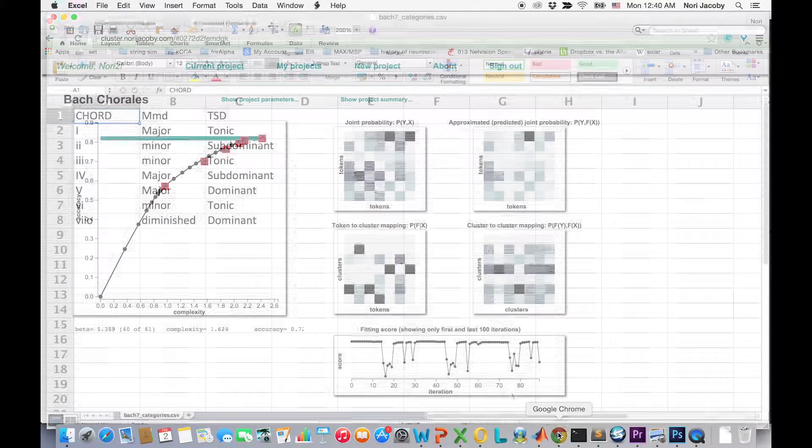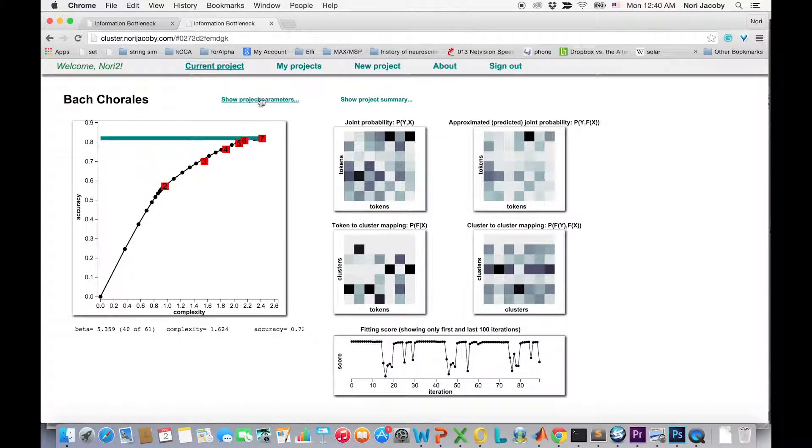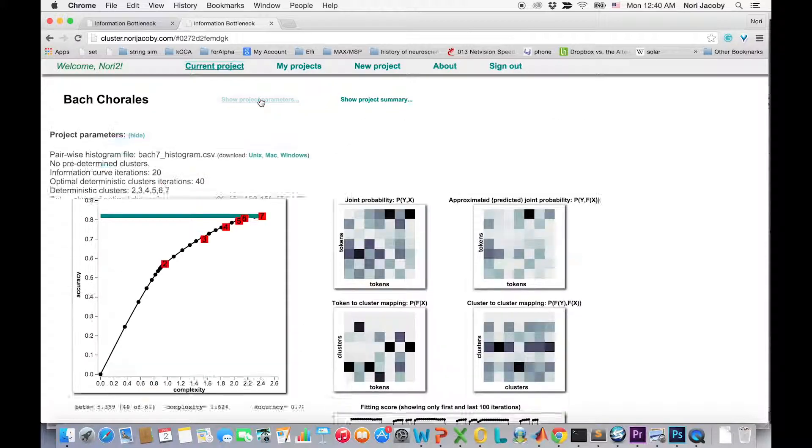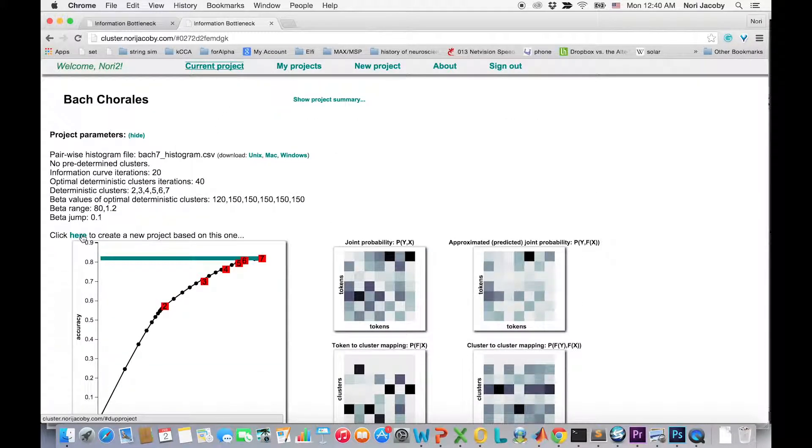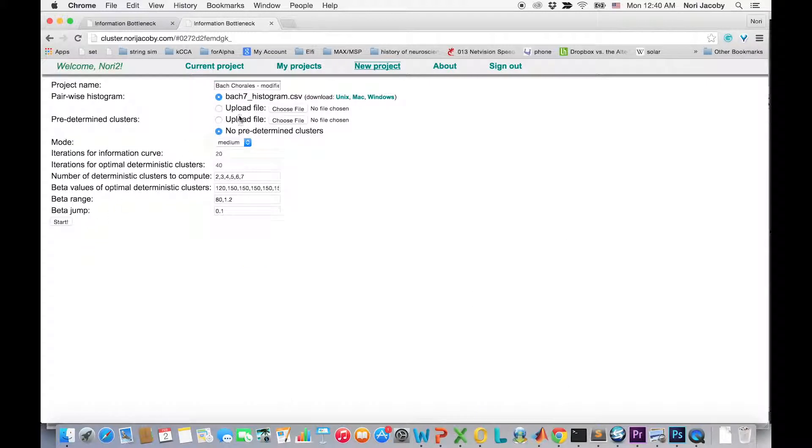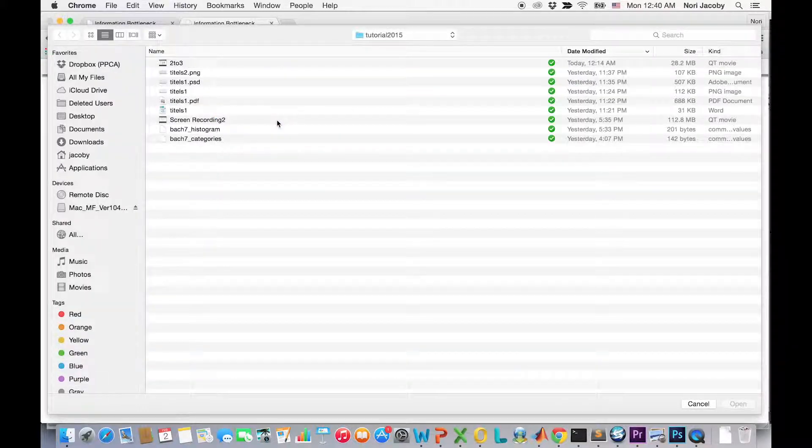We can go back to the applet and create a new project based on the current project. The only change we will need to do is to use now the predetermined categories from the saved CSV file.